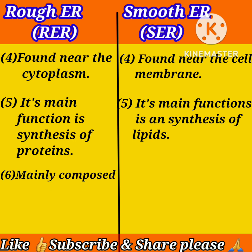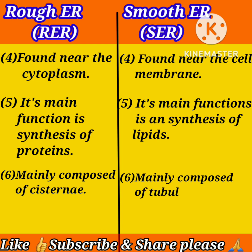Sixth difference: rough endoplasmic reticulum is mainly composed of cisternae, while smooth endoplasmic reticulum is mainly composed of tubules.